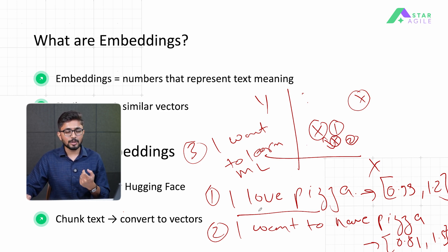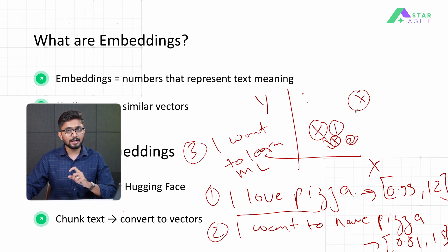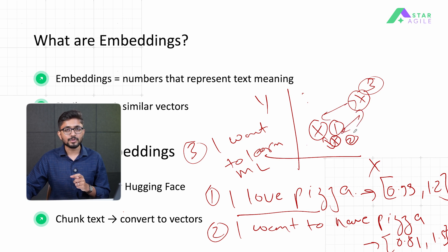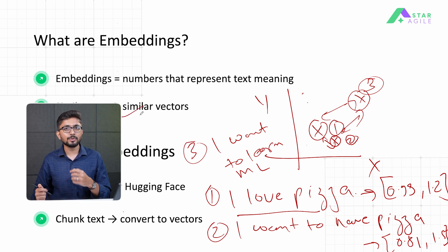Remember, the first two sentences were talking about affection towards pizza, whereas the third sentence is talking about the need to learn machine learning. These two sentences convey one set of meaning, whereas the third sentence conveys a totally different meaning. Therefore, on the embedding dimensionality plane, the embedding of the third sentence will be farther away from the embeddings of the first two. Words with similar meaning will have vectors much closer to each other.